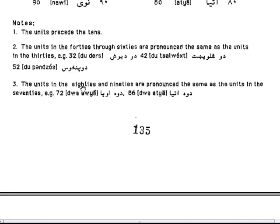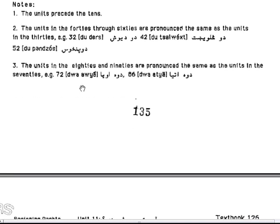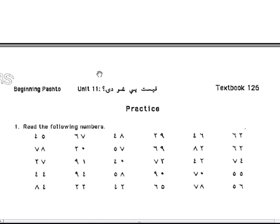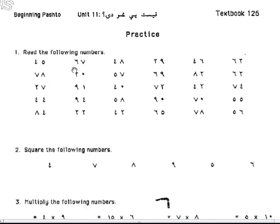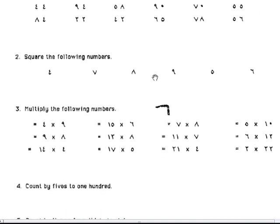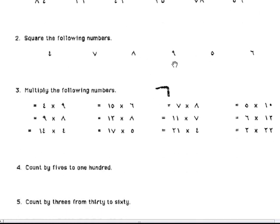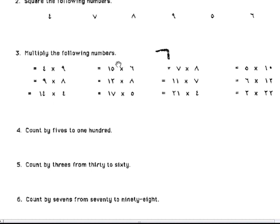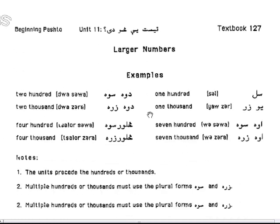I want you to read through these notes and memorize the information here. To be assured that you've learned numbers in Pashto, make sure you read the following numbers. Square the following numbers if you can. Multiply the following numbers if you can. Count by 5s to 100, count by 3s from 30 to 60, and count by 7s from 70 to 98.